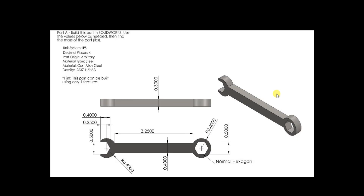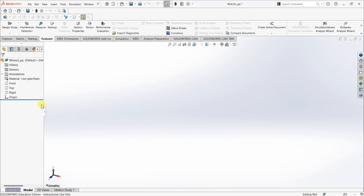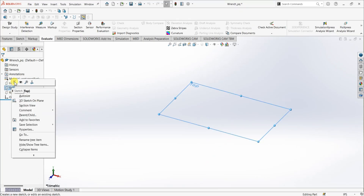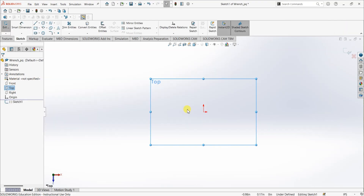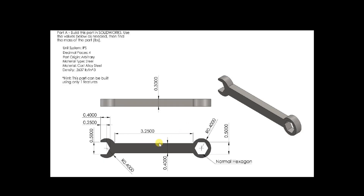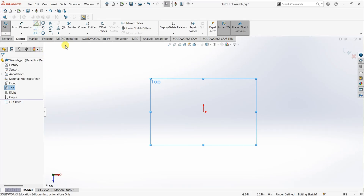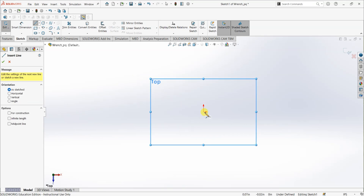In this video we'll learn how to design a simple wrench in SOLIDWORKS. We have a top view and front view. The unit system is IPS. The material we are going to use for this part is cast alloy steel. So let's go ahead and start with the top view. Right-click on top, select sketch. First I'm going to draw this line. Make sure that the unit system is in IPS.